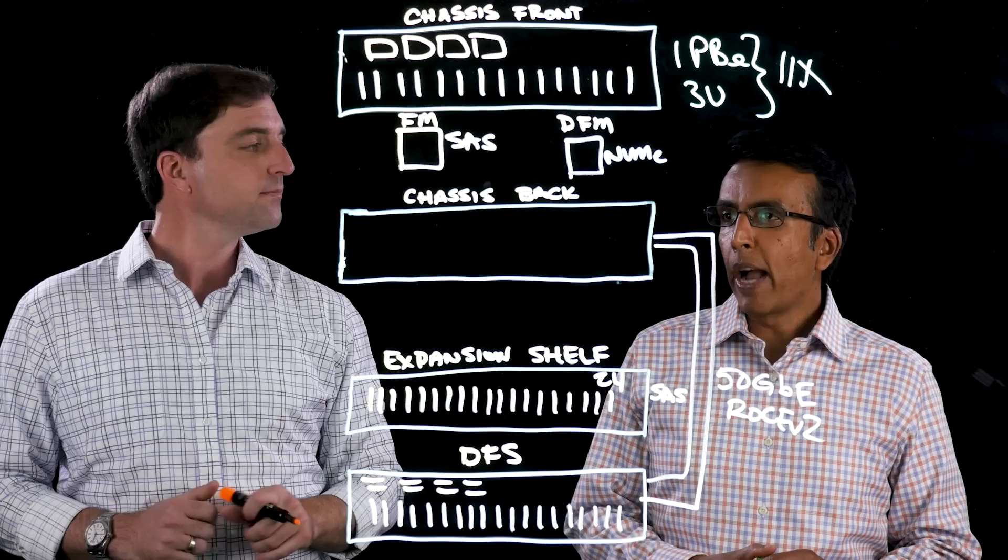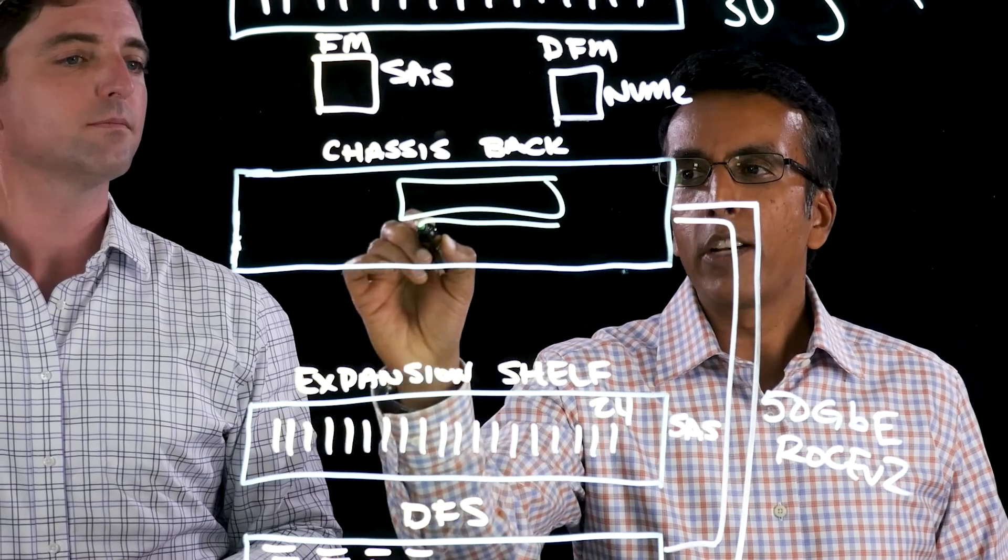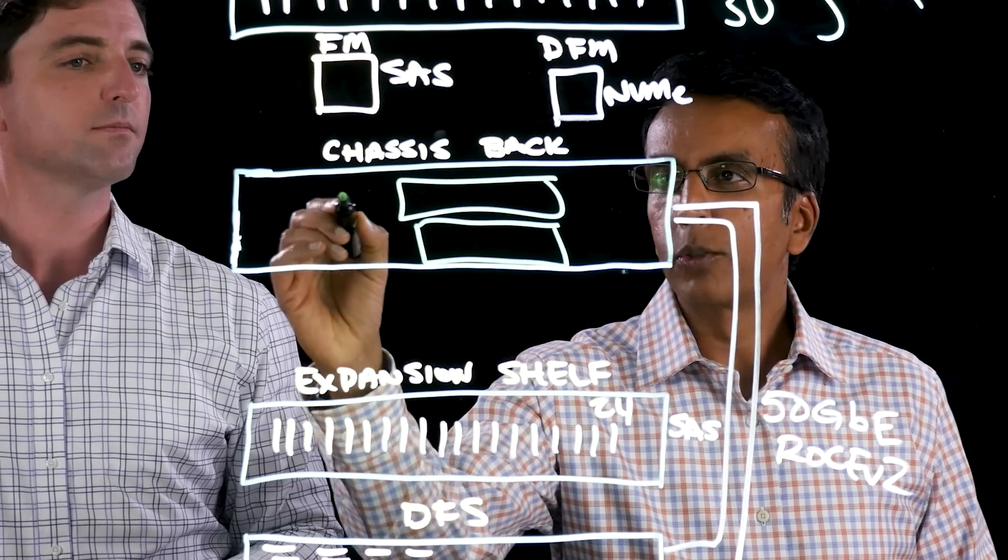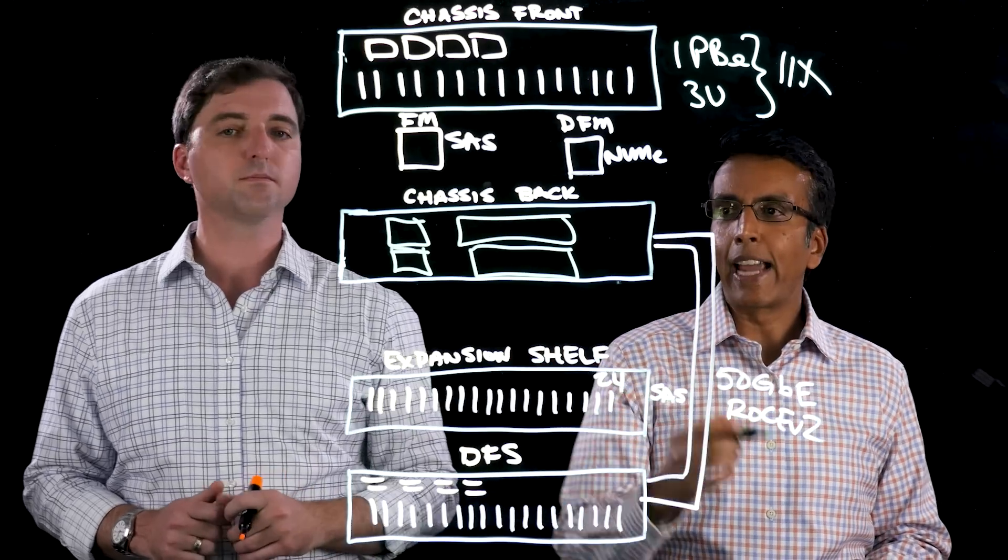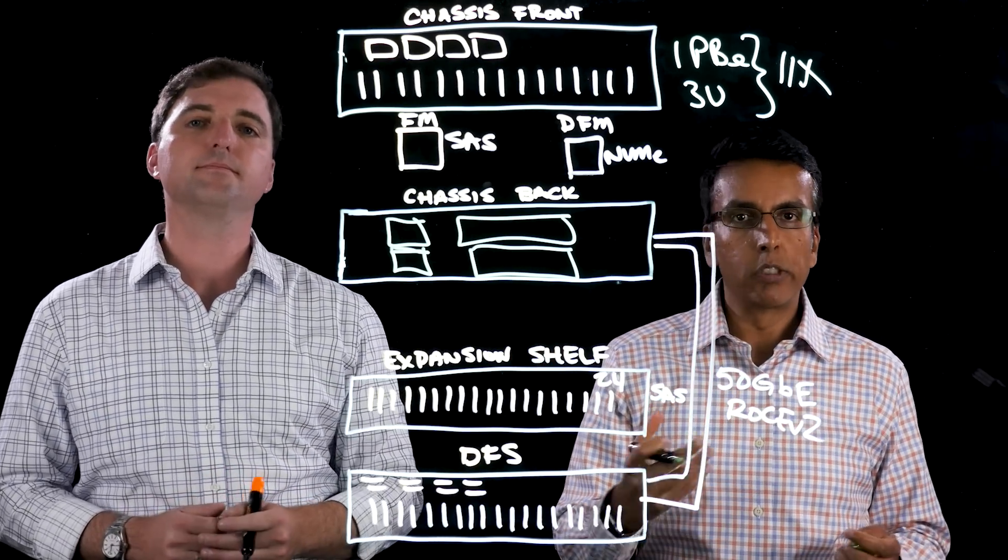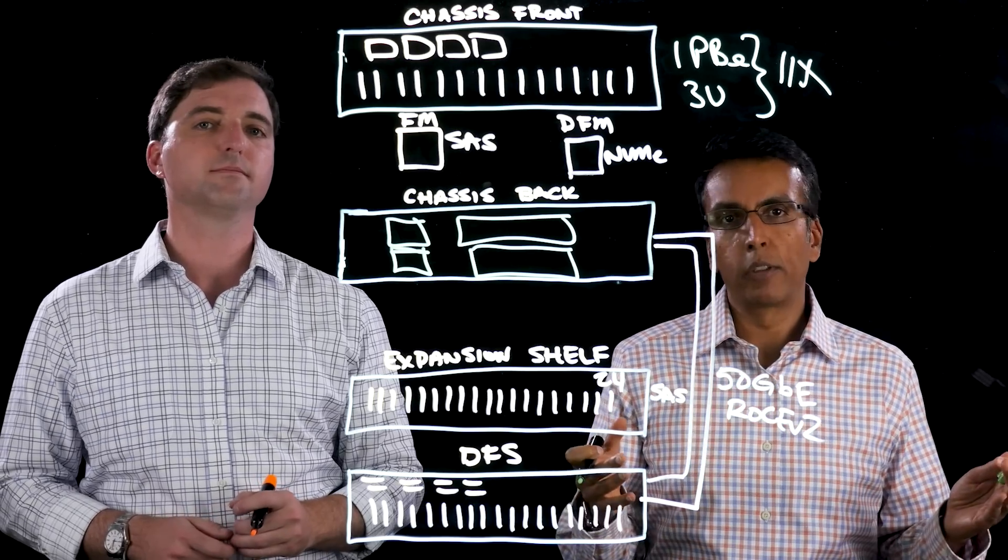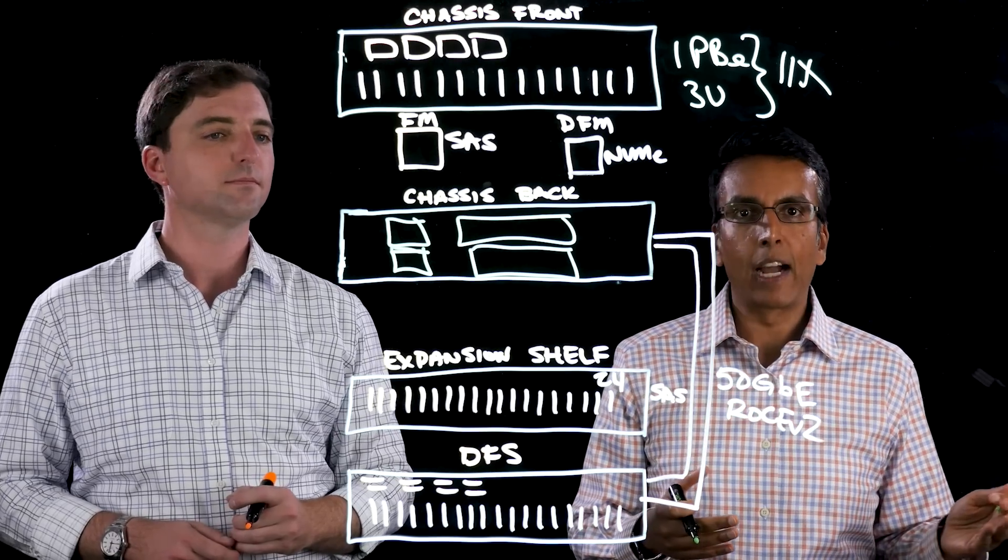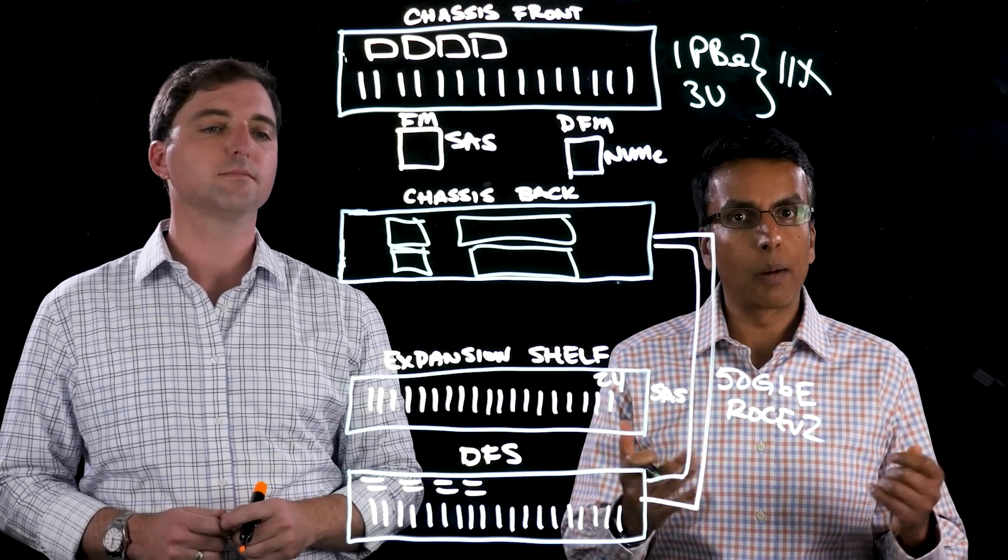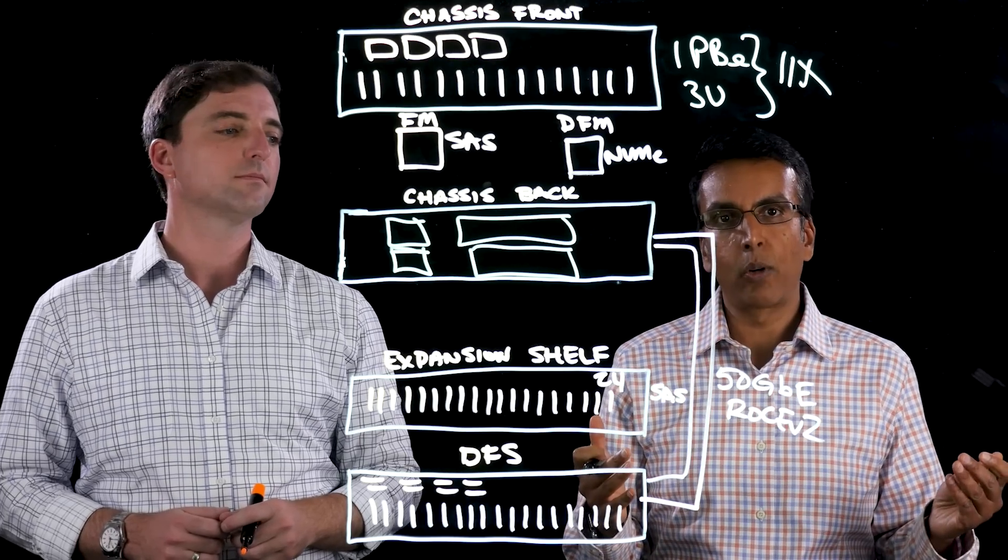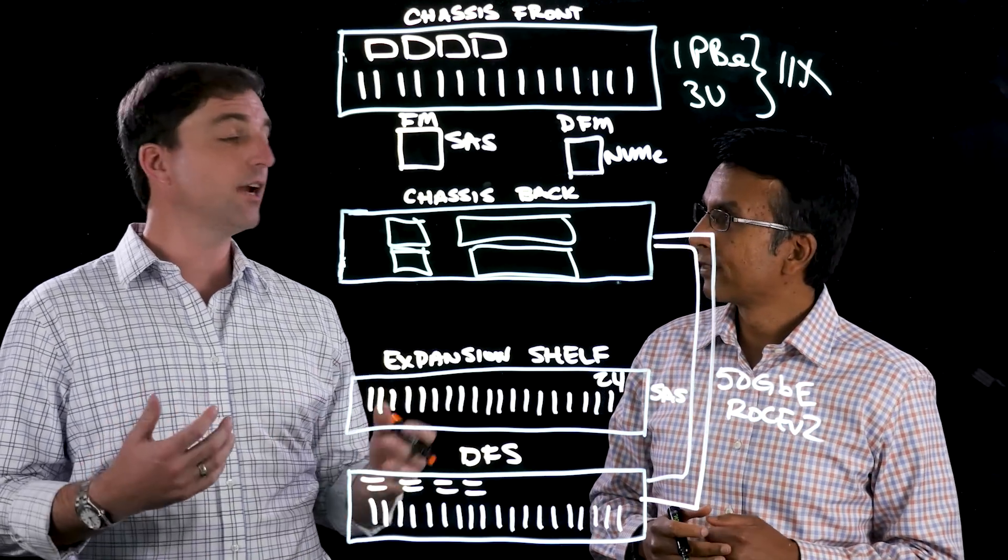On the back end of the chassis are dual controllers that are HA controllers as well as two power supplies. The controllers are completely active-active on the front end. And on the back end, we reserve the performance of one of the controllers so that customers get full levels of performance even through maintenance and upgrade scenarios. That means they can do maintenance operations or upgrade operations completely during business hours. They can get rid of downtime as well as get rid of maintenance windows.